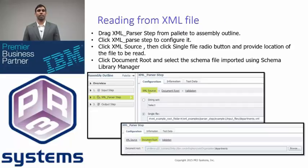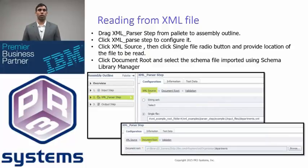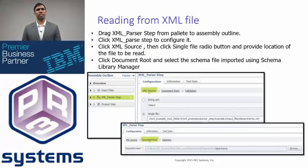Now, reading from an XML file — that was the whole point of this video. Once we go into the hierarchical data stage, this is the sort of screen that we'll see. There's going to be the input stage, the XML parser step, and the output step. In all of these, we're going to want to configure everything. When we go into the parser step, we're going to want to specify the XML file, and then we're going to want to go into document root and select the schema file that we imported earlier so that our hierarchical data stage can read our XML file.